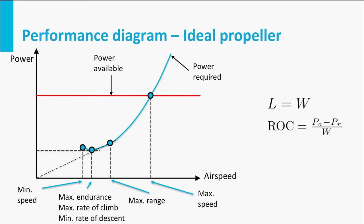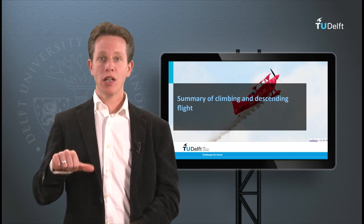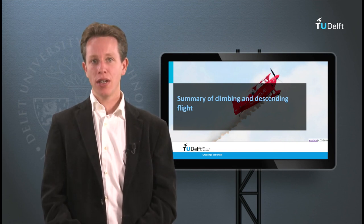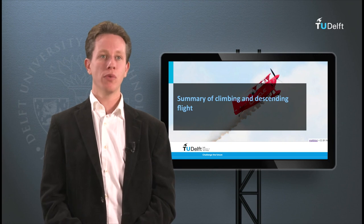It is quite important to realize that these diagrams are applicable for one specific altitude or air density and one specific aircraft weight. What will happen to the climb performance if an aircraft goes up in the atmosphere? Will it improve or get worse? This will be the topic of the next item. I will then address the effect of altitude on aircraft performance.